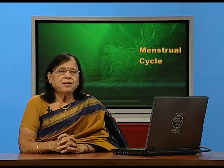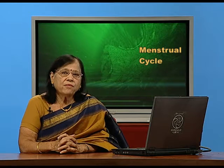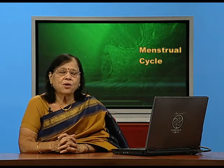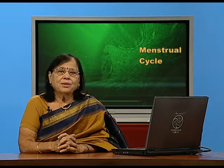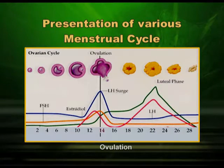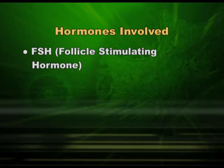In previous sessions we discussed ovarian follicles, the Graafian follicle, the corpus luteum, and the corpus albicans. Now let us apply that knowledge to understanding the menstrual cycle. In this diagram, the follicle starts immature and becomes mature gradually under the influence of follicle-stimulating hormone, or FSH, from the anterior pituitary. FSH stimulates — meaning growth, enlargement, or maturation of — the ovarian follicle.